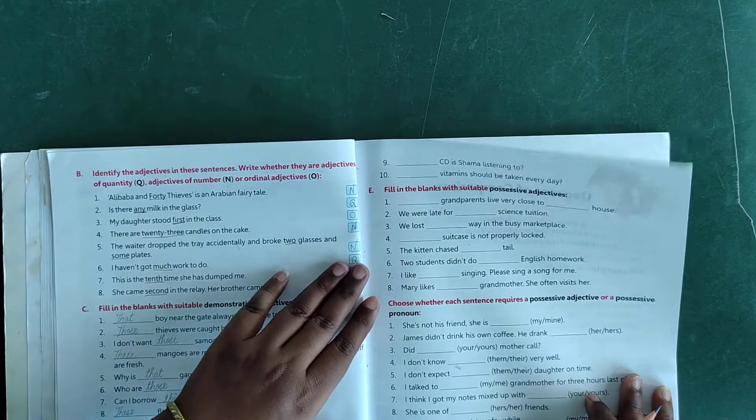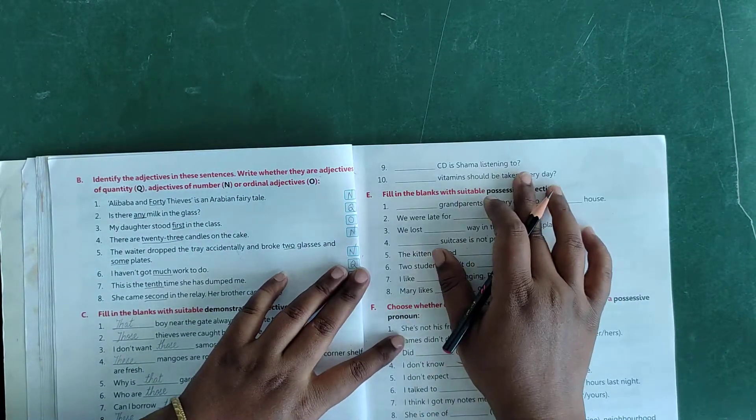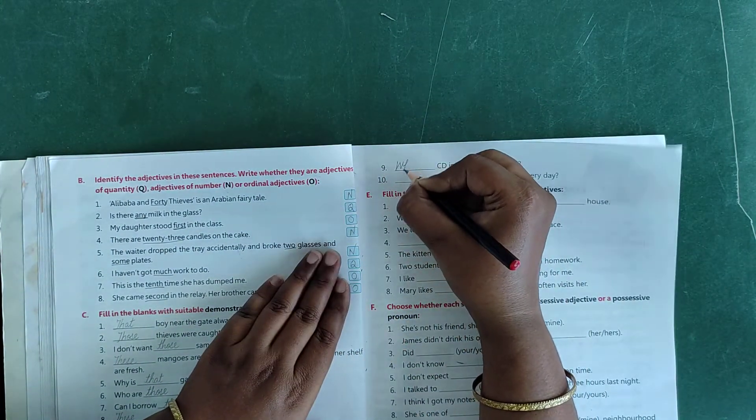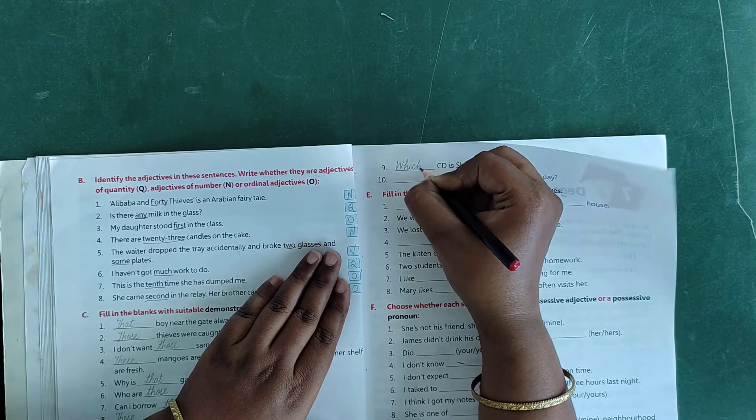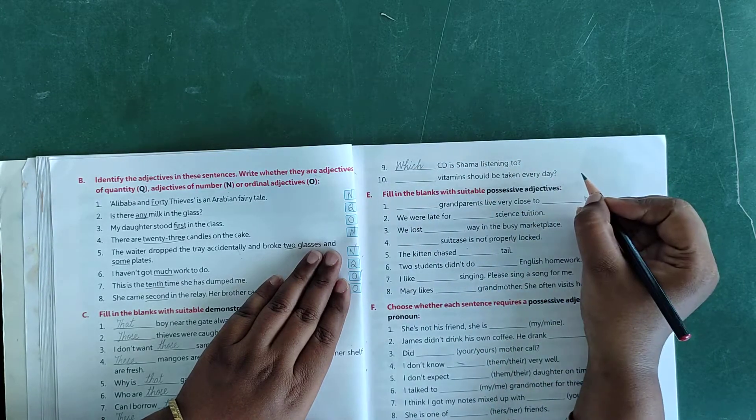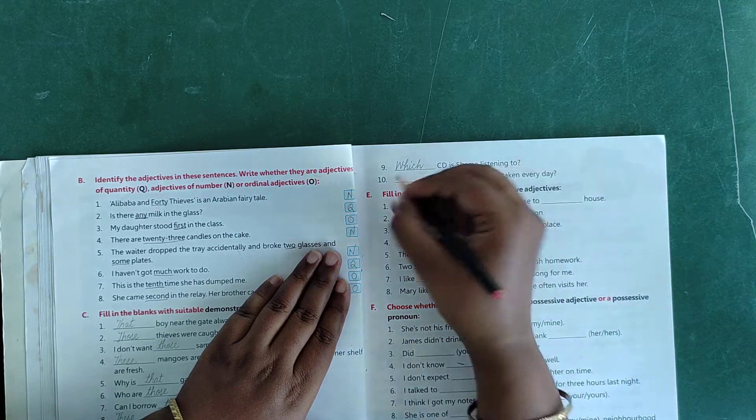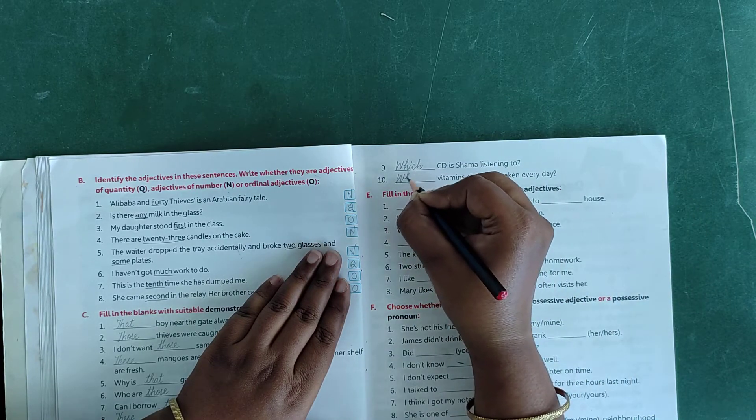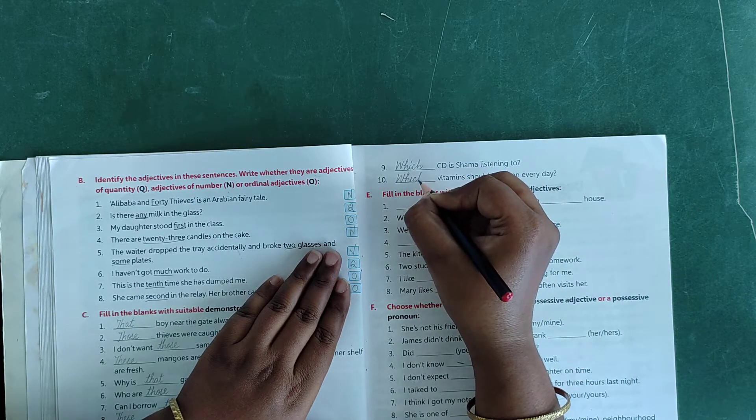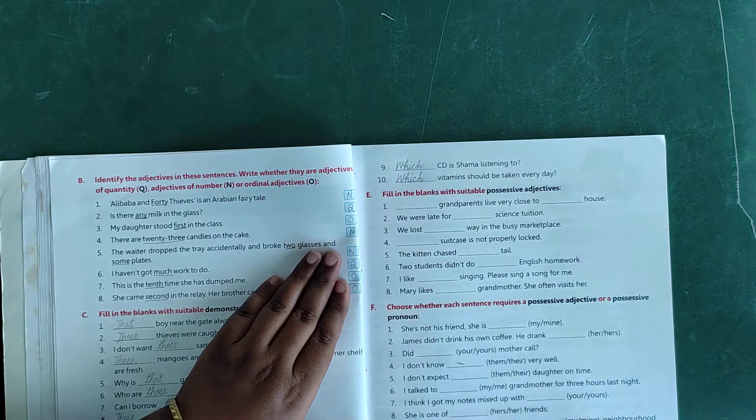Number 9: dash CD is Shama listening to? Which CD, W-H-I-C-H, which. Number 10: dash vitamins should be taken every day? Which vitamins. Now exercise E.